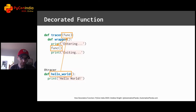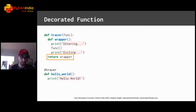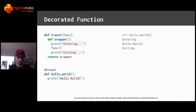When Tracer decorates hello world, that means hello world will be wrapped by entering and exiting print statements. Finally, the decorator returns the new wrapper function. Anytime the decorated function is called, it will effectively be replaced by this new wrapper function. So when we call hello world, the trace statements are now printed too. That is how decorators work.